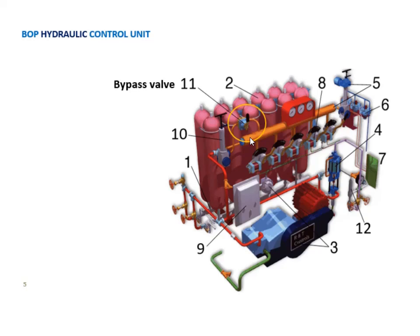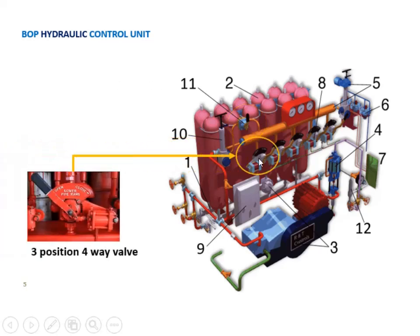To control BOP position for each function, there will be one specific three-position four-way valve for each BOP function. This valve could be activated manually from the hydraulic unit or from remote panel. The position of the three-position four-way valve will determine the position of each connected equipment. During normal drilling operations, the valves position are open for RAMs and annular, but closed for HCR.